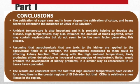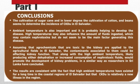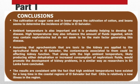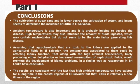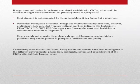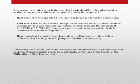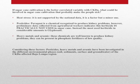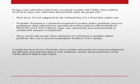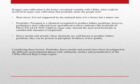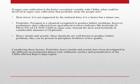These results are consistent with the fact that high ambient temperatures have existed for a long time in the coastal regions of El Salvador, but chronic kidney disease is a relatively new illness in the region. If sugarcane cultivation is the best-correlated variable with CKD, what could be involved in sugarcane cultivation that probably makes people sick? There are several possibilities. Heat stress? It is not supported by the national data — it is a factor, but a minor one.